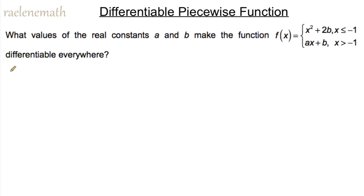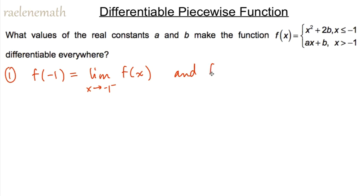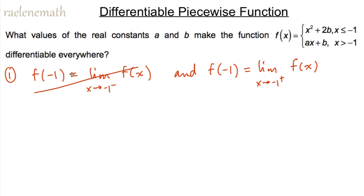The first thing I'll do is use the continuity equation and state that f of negative one equals the limit as x approaches negative one from the left of f of x, and also equals the limit as x approaches negative one from the right of f of x. When x is negative one and approaching from the left, I use the first quadratic expression, so the first equation is a repetition — the left side and right side give the same thing. So I need to use my second statement: f of negative one, namely (negative one) squared plus 2b, equals the limit as x approaches negative one from the right, substituting the expression ax plus b.